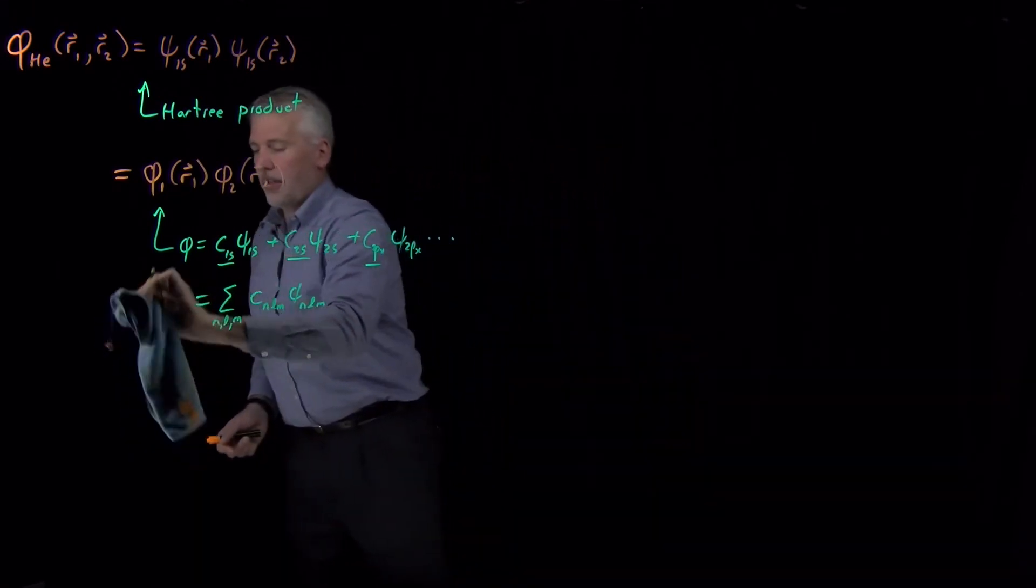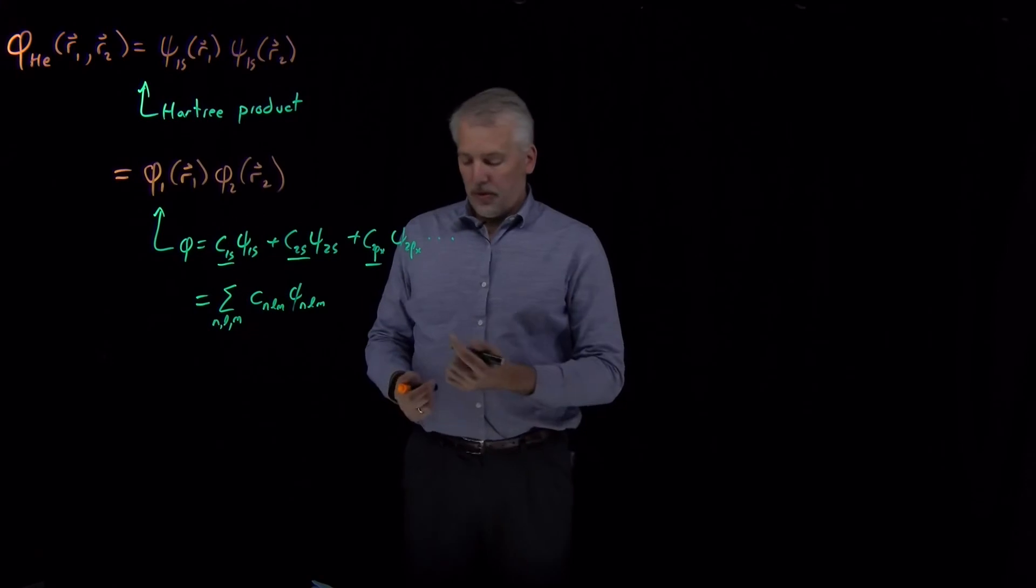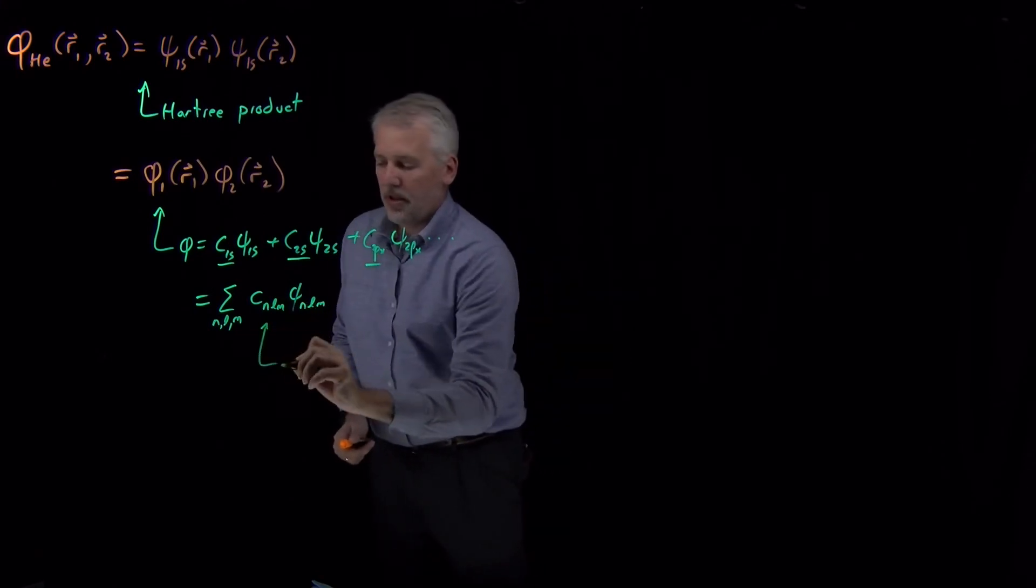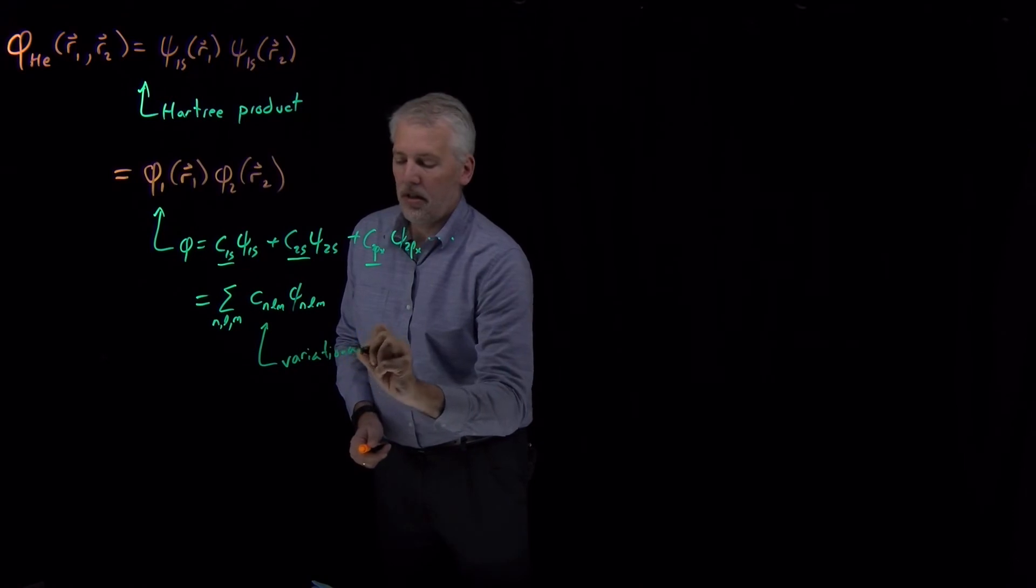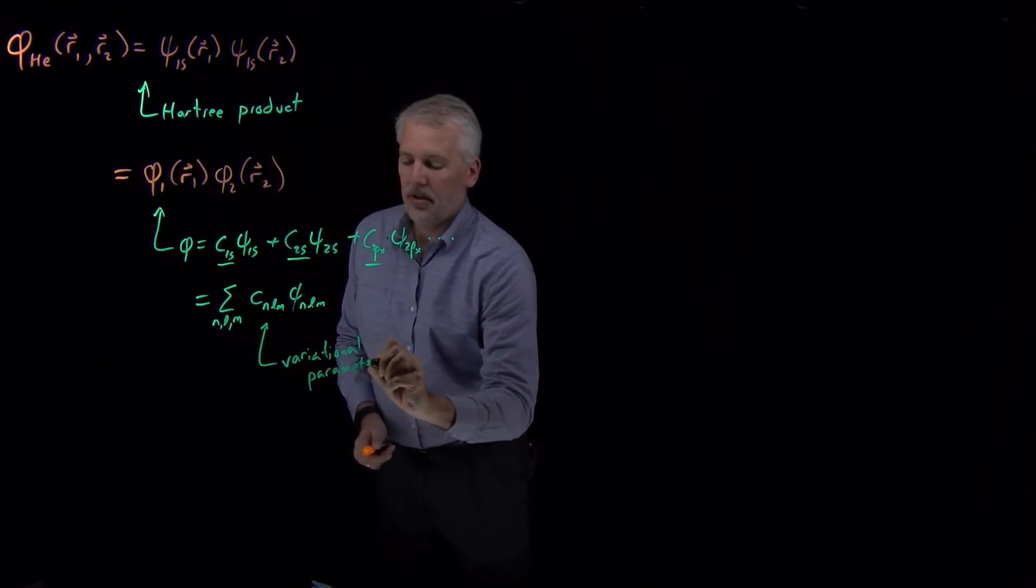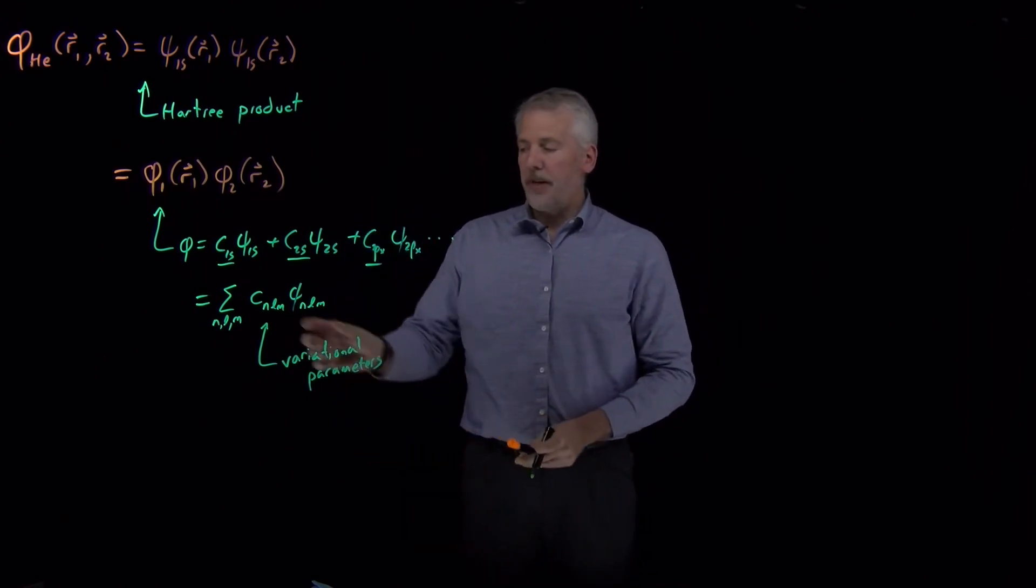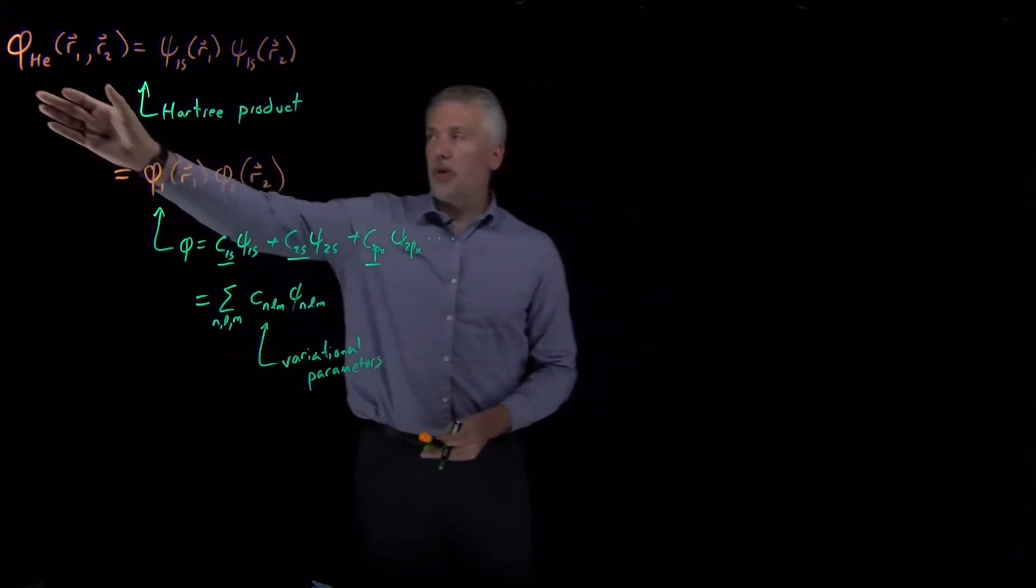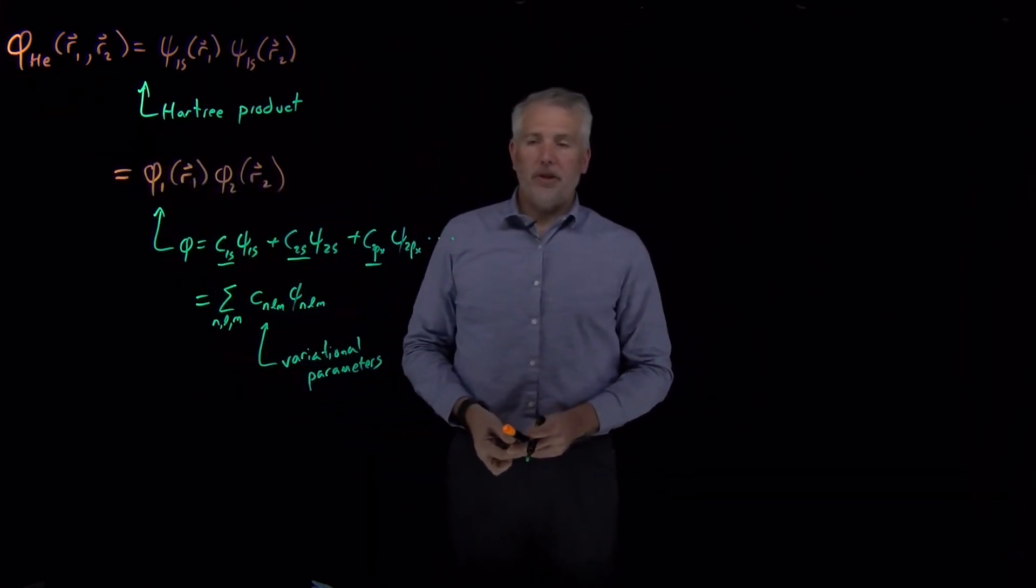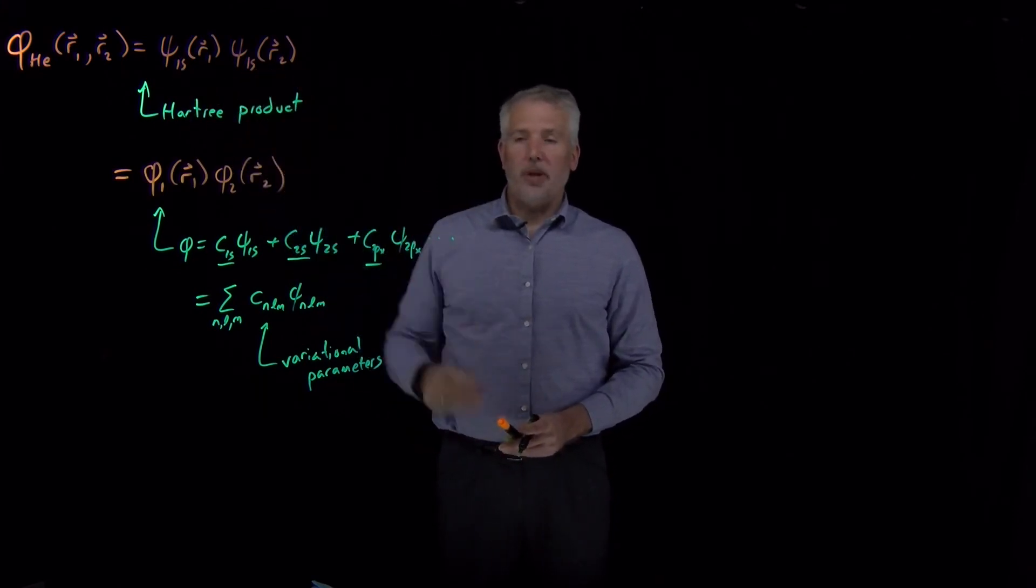And I just use the product of one of these for electron one, another one for electron two. If I then use the CNLMs as my variational parameters to decide what the optimal value of these parameters are, that will give me the lowest possible value of the energy when I use this particular trial wave function, then I can do a better job than if I just say a 1s times a 1s.